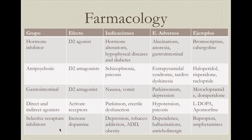Selective reuptake inhibitors block the DAT transporter, allowing dopamine to remain longer in the synaptic cleft and increasing its function. These are used for depression, tobacco addiction, ADHD, and obesity. Side effects include dependence and hallucinations — since dopamine is essential to the reward system — and anticholinergic effects from too severe an increase in dopaminergic tone in the basal ganglia. Main examples are bupropion (used for tobacco dependence) and amphetamines (used for ADHD in children and adults).